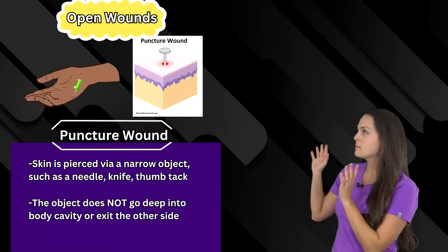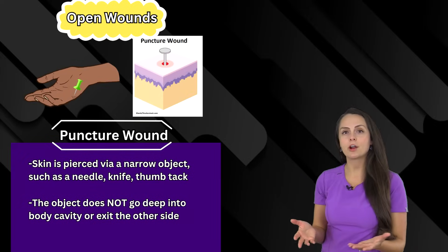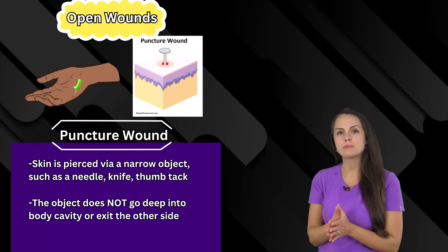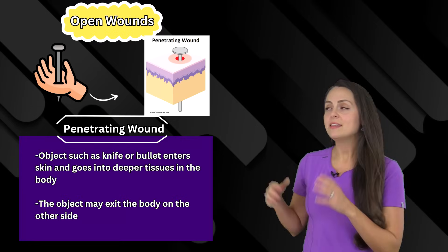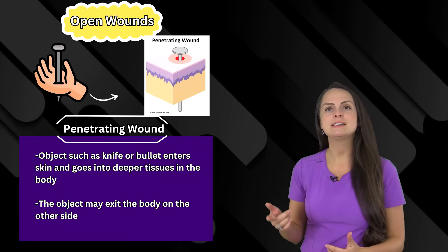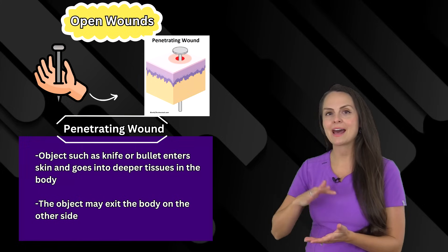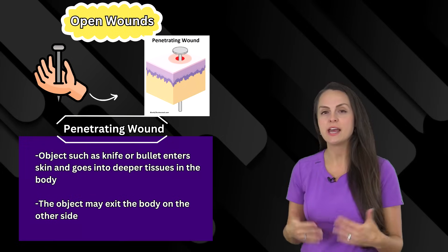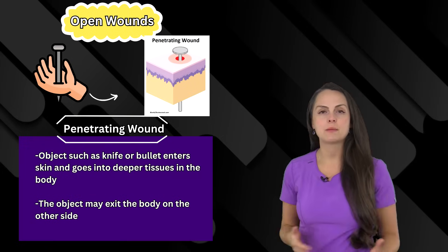Next is a puncture wound — just as its name says, this occurs because a sharp narrow object like a knife or needle has punctured the skin. If we go further with a puncture wound we end up with a penetrating wound, where the object goes past the underlying skin into much deeper tissues. This can occur with a gunshot or some type of stabbing.